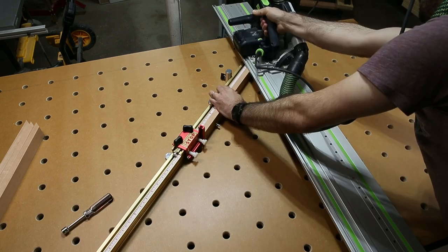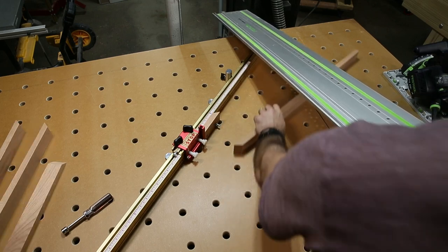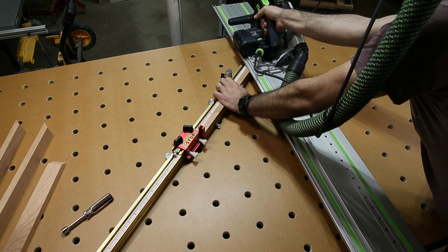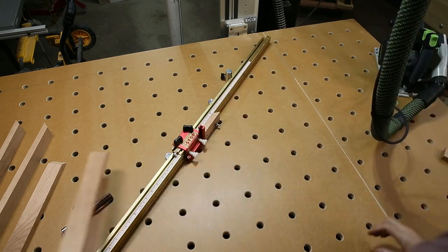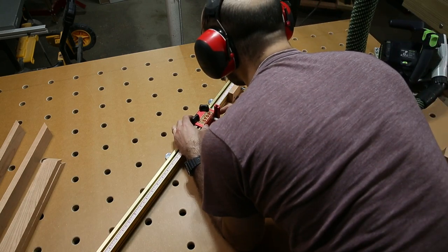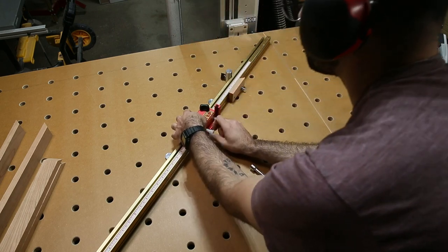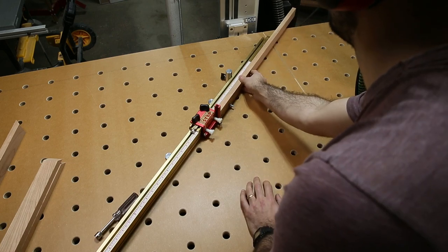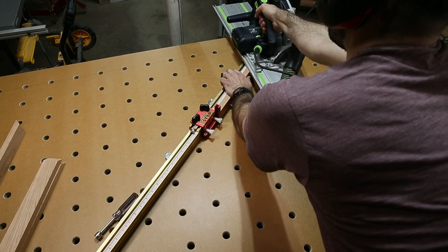So first I'll cut both of the long pieces and now the magic of the Incra fence system is that I can just move my stop directly to my finished length for the short pieces. And I can be very sure that it's going to be the right length. So I'll cut both of those short pieces.